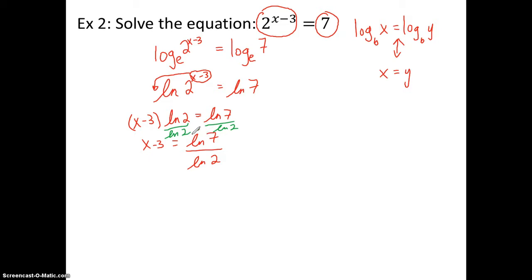Then lastly, I'm going to add 3 to both sides. So I'm going to add 3, add 3. And I'm going to get x equals ln of 7 over ln of 2 plus 3. That will be my answer. Now I could put this in the calculator if I wanted to and just put it just like this to get an approximation. But we're looking at just solving it without a calculator right now.